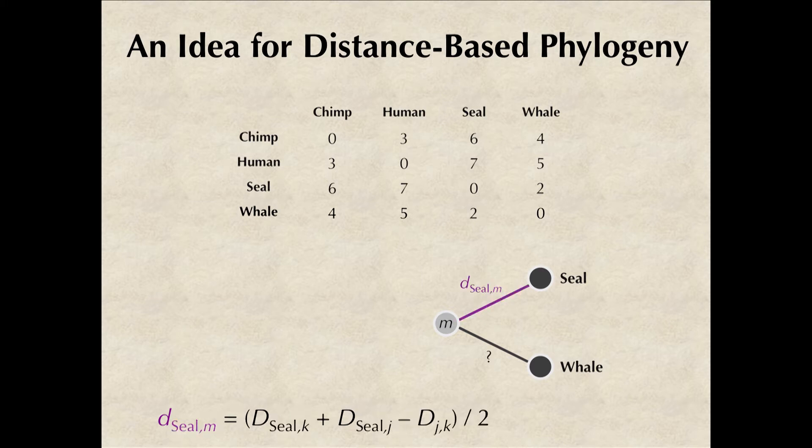Let m denote the parent of neighbors seal and whale. Let's first replace i with seal in our equation. j is the neighbor of seal, so let's replace j with whale.